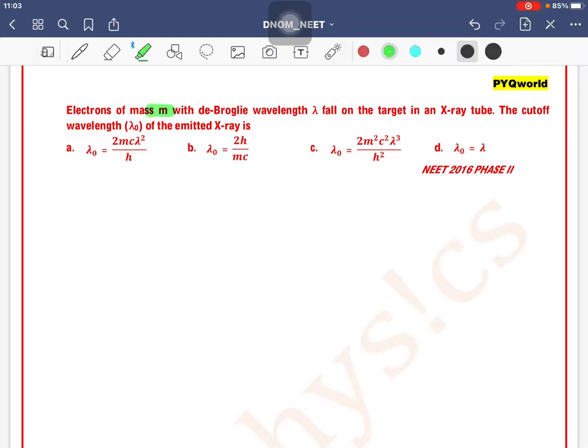Electrons of mass m with de Broglie wavelength lambda fall on a target in an X-ray tube. The cutoff wavelength of the emitted X-ray is... So, what is the formula for kinetic energy? We have one: hc by lambda.